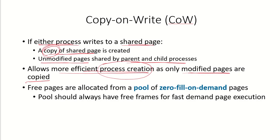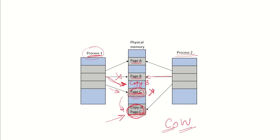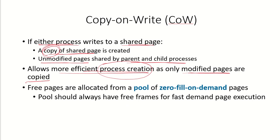When a new page needs to be allocated — either for a new page or a copied page — a new frame must be assigned. These frames are allocated from a pool of zero-fill-on-demand pages. Zero-fill means the content of those frames is erased before allocation, and on-demand means they are allocated as required. This pool should have free frames ready for fast demand paging. This is the concept of Copy-on-Write, which creates an efficient process creation technique.